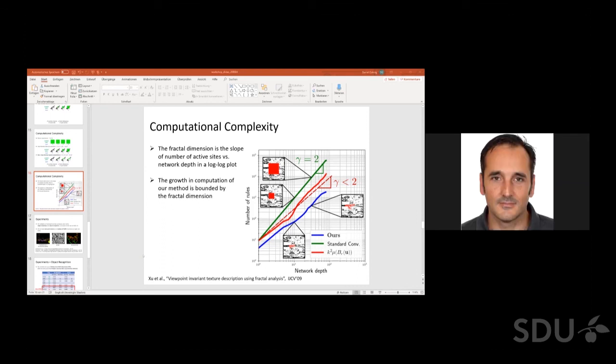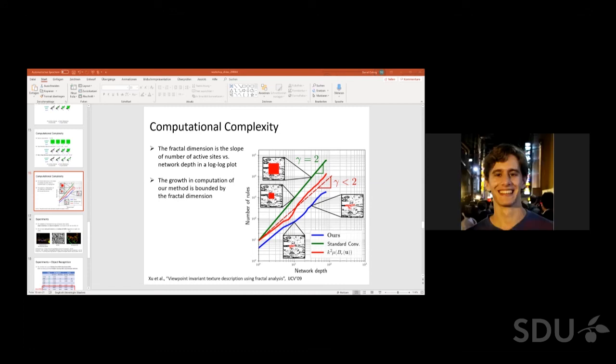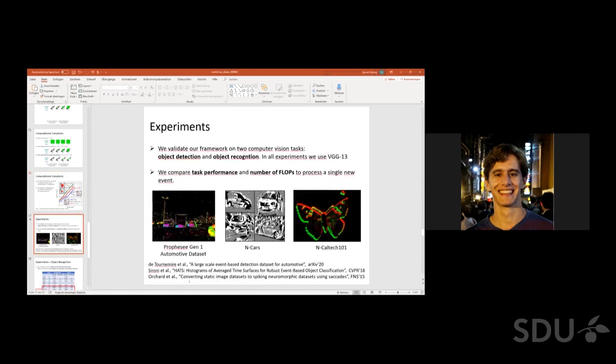There's a question here from Juan Pablo. It says, how did you label the data for object recognition? So for object recognition we used standard benchmarks. We're using the N-CARS dataset proposed in CVPR 18 and the N-Caltech 101. And for object detection we are actually using the dataset from Prophesee which was released earlier this year. They label the data as they said with a frame-based camera and then transfer the labels to the event stream.